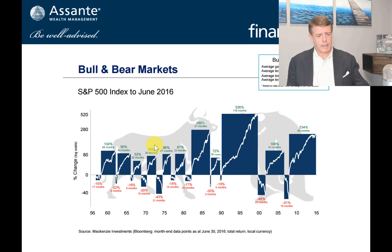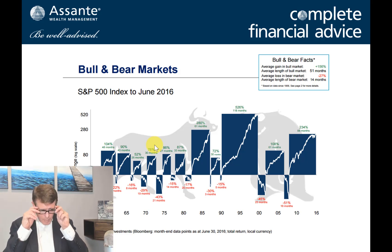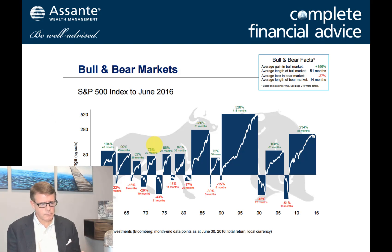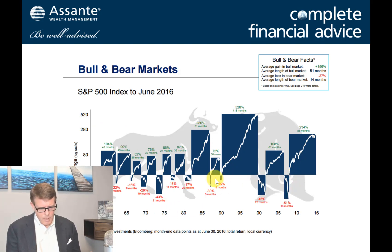Now this is an interesting chart — it's really an extension of the discussion on portfolio volatility. Looking at the U.S. market from 1956 to June 2016, the bars above zero are all the bull market cycles — positive markets — and the bars below zero are negative or bear market cycles. You can see a number of different cycles. I can remember very strongly 1987 — I was working with a trust company at that time in the branch, and we saw over a very short period of time a very major correction in the stock market.